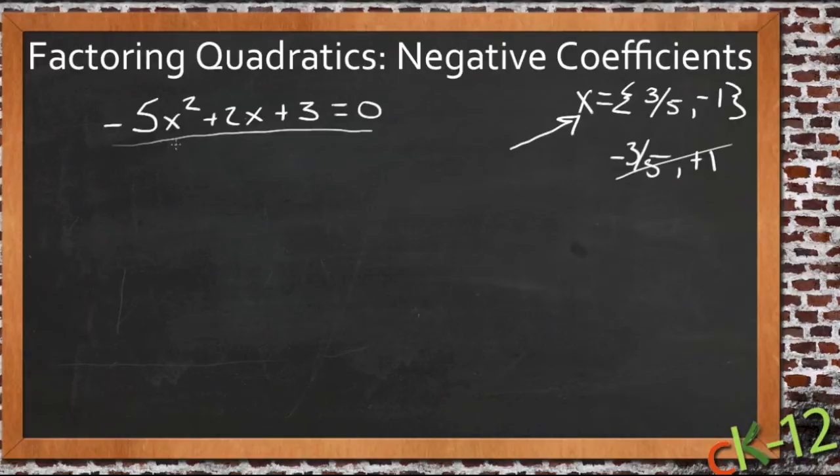The first thing we're going to do here is multiply everything through by negative 1 because that's going to make our leading coefficient positive. So let's multiply everything by negative 1 and we'll get 5x squared minus 2x minus 3 equals 0 because 0 times negative 1 is still 0.